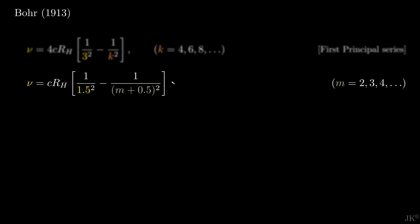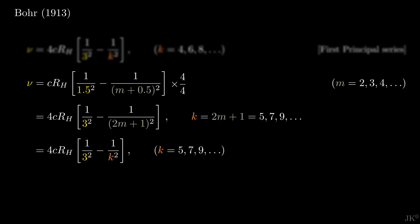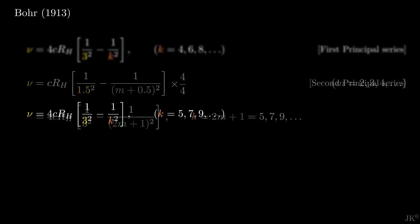Let's repeat this with the second of Fowler's formulas. Multiply and divide by 4, rearrange the terms in the denominator, and introduce a new index k, this time given by 2m plus 1, which now can only take odd values equal or greater than 5. Notice that the two relations become identical. Their only difference is whether the index k is odd or even.